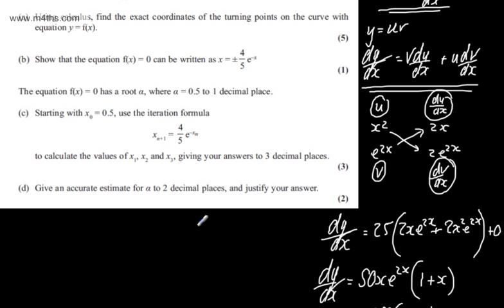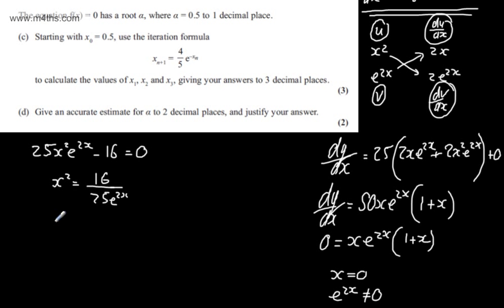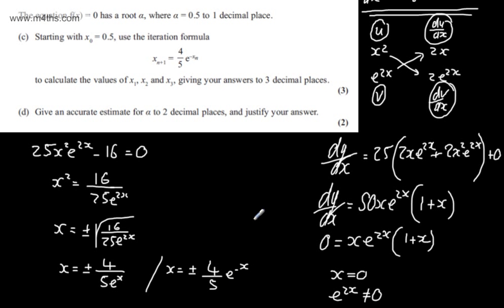In part B for 1 mark, we're asked to show that the equation f(x) equals 0 can be written as x equals plus or minus 4 fifths e to the minus x. Let's set this equal to 0. We have 25x squared e to the 2x minus 16 equals 0. I'm going to add 16 to both sides and divide by 25e to the 2x. So x squared equals 16 over 25e to the 2x. Square rooting both sides gives x equals plus or minus 4 over 5e to the x, which we can write as x equals plus or minus 4 fifths e to the minus x as required.